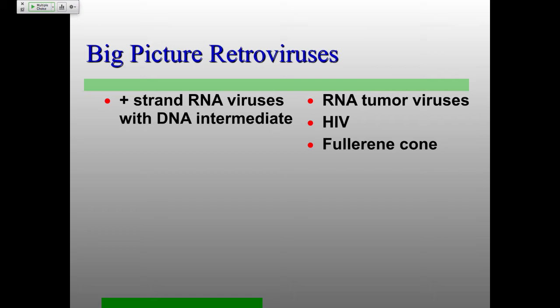Retroviruses — we talked about this way back when. These are viruses that package positive strand RNA in their virions but have to replicate through a DNA intermediate. This is why David Baltimore and Howard Temin got the Nobel Prize — they figured this whole process out. These really are RNA tumor viruses, and the original oncogenes were found because of the study of these particular viruses. That was really bizarre because they were RNA viruses but were causing a genetic disease in cells.